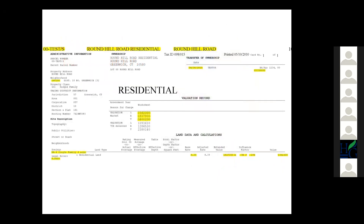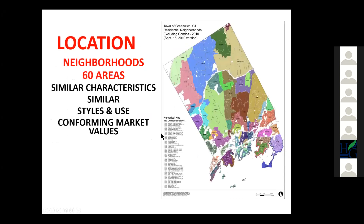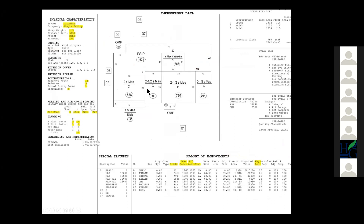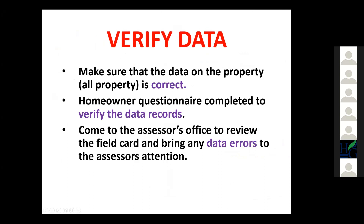Our property record card for residential properties shows the history of past assessments, characteristics of land, address, parcel numbers, and so forth. The back of the card describes the building, its various components, how we cost out the values of those components, and all building features in our database. Once we've created the database, we verify the data and make sure all property information is correct. We sent out a questionnaire asking each homeowner to verify the data on our records, and we encourage homeowners and commercial property owners to come into the assessor's office to review their records and bring any data errors to our attention.